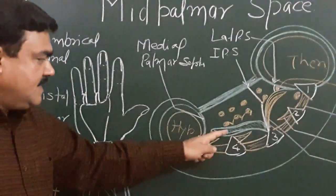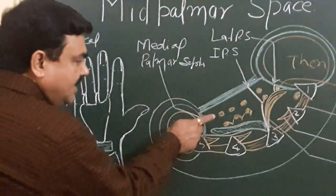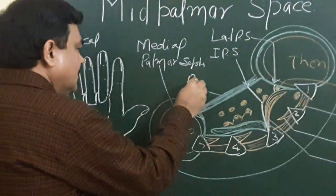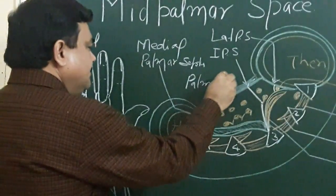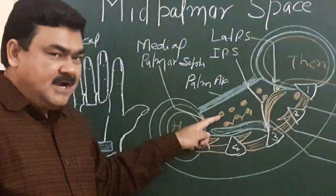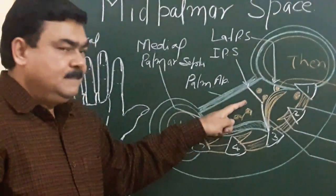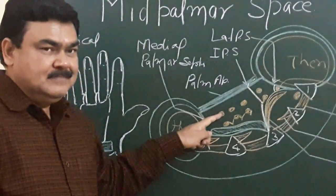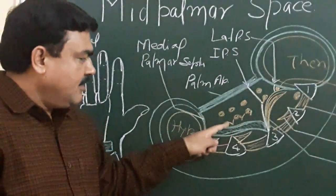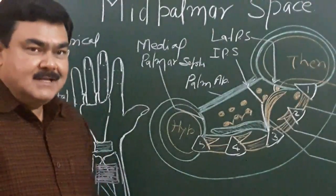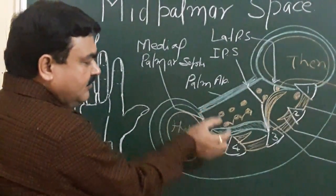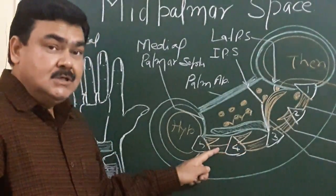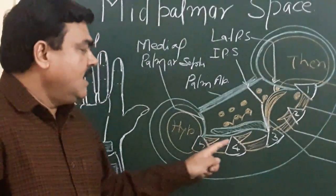The boundary of the mid-palmar space: the anterior boundary is formed by the palmar aponeurosis, along with the flexor tendons of the middle finger, ring finger, and little finger — that is, flexor digitorum superficialis, flexor digitorum profundus, and the second, third, and fourth lumbricals. The posterior boundary is formed by the third and fourth dorsal interossei, third and fourth palmar interossei, and fascia covering them.